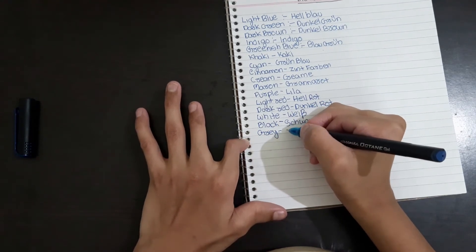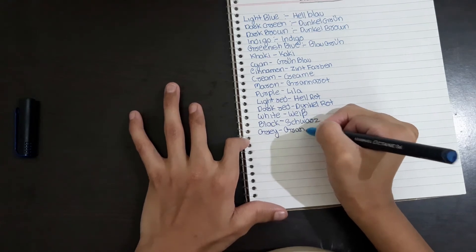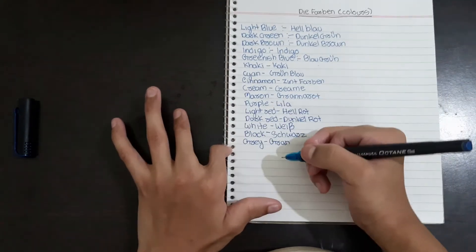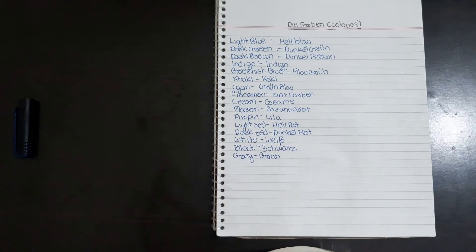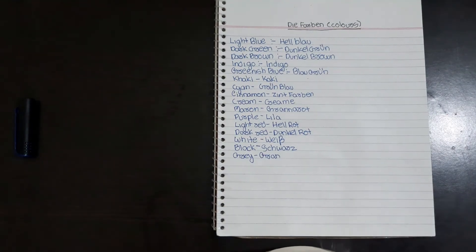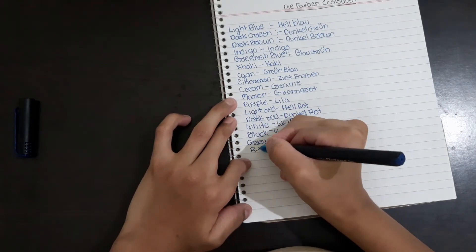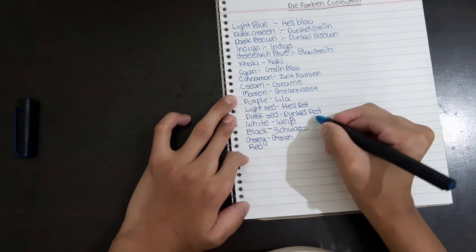Grey is Grau, not granny, Grau. Red means Rot.